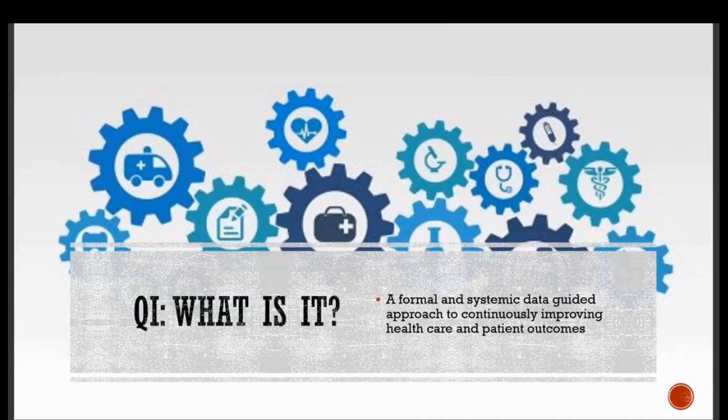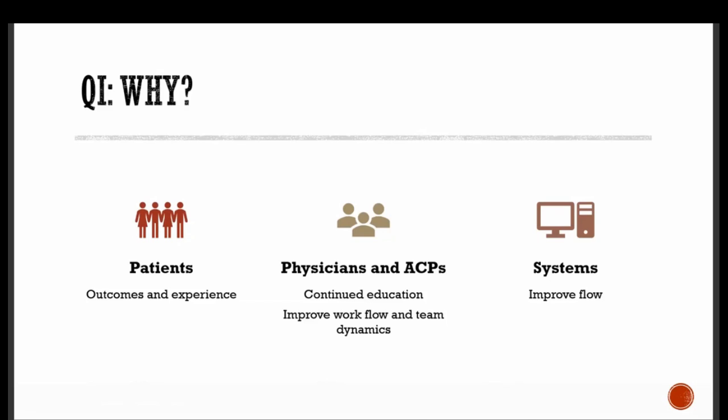What is quality improvement? It is a formal and systematic data-guided approach to continuously improving health care and patient outcomes. QI primarily helps outcomes and experience of our patients — that's our overarching number one goal. The American Board of Pediatrics requires some continuing education on quality improvement. QI work can also bring teams together that practice differently, and you can use QI to improve the flow of the system.